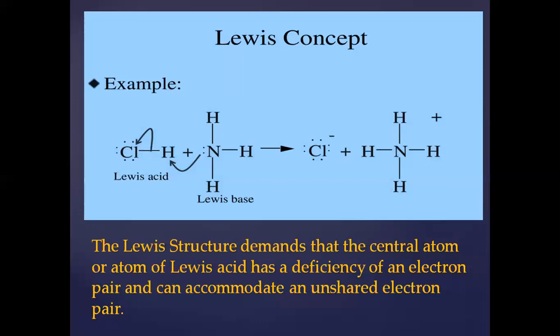NH3 has donated the electron pair to HCl, so we will say that NH3 is a Lewis base. After the reaction, you can see that NH3 has been converted to NH4+, the ammonium ion. The bond between hydrogen and nitrogen is called coordinate covalent bond. This bond is created by electron pair donation.